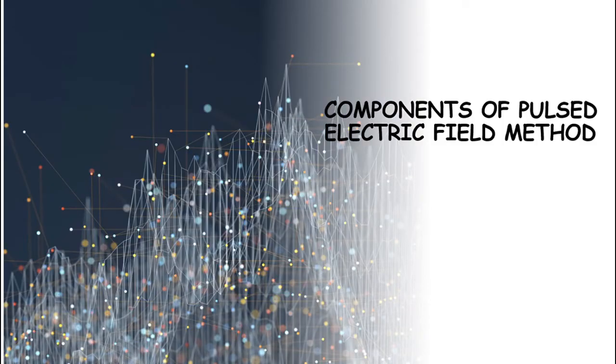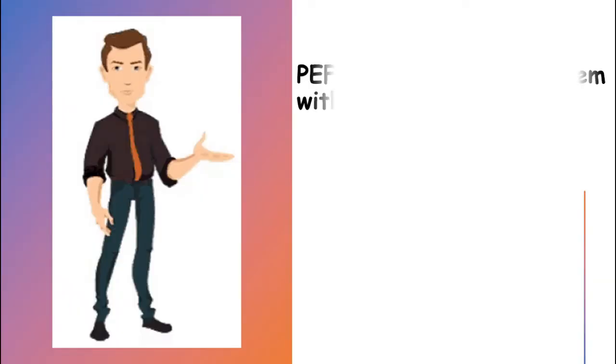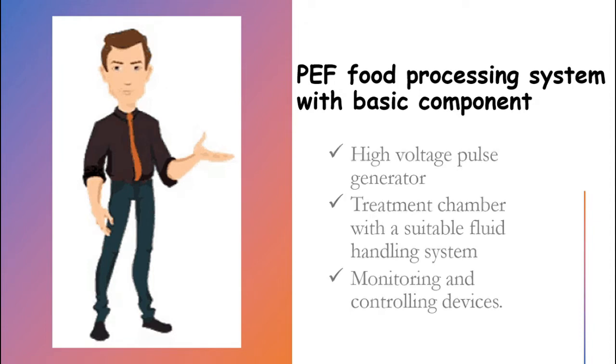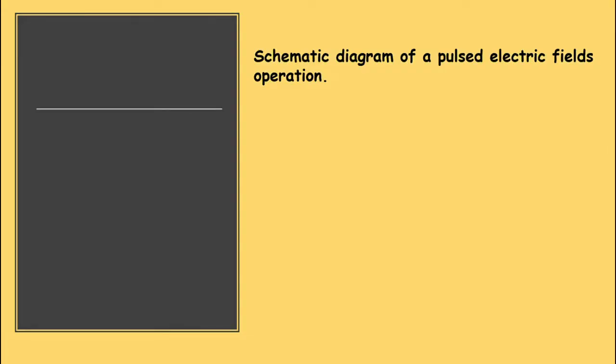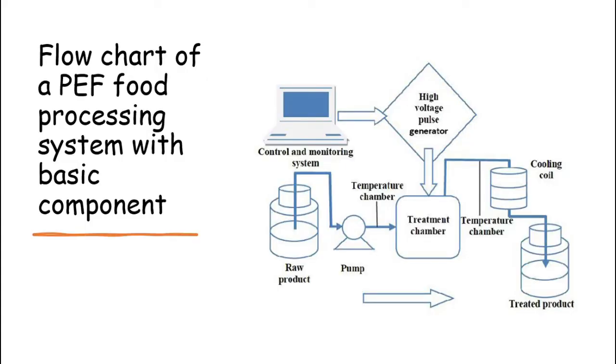Then we are going to see about components of pulsed electric field processing. First, we are going to see the PEF processing system with basic component. The equipment consists of a high voltage pulse generator and a treatment chamber with a suitable fluid handling system and necessary monitoring and controlling device. So, this flowchart represents the PEF food processing system with basic component. Food product is placed in the treatment chamber either in a static or continuous design where two electrodes are connected together with a non-conductive material to avoid electric flow from one to other. Generated high voltage electric pulses are applied to the electrodes which then conduct the high intensity electric pulse to the product placed between the two electrodes. The food product experiences a force per unit charge, the so-called electric field which is responsible for the irreversible cell membrane breakdown in microorganisms.